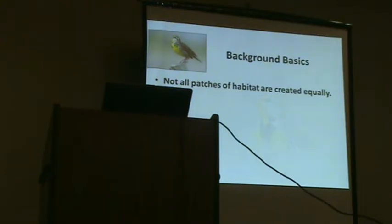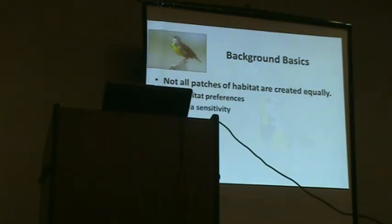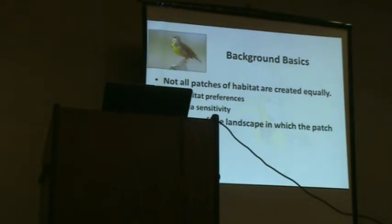Not all patches of habitat are created equally — we know that very well. We can think of it in a couple of different ways: both in terms of specific habitat preferences, since not all species are looking for the exact same patch of grass, and then in terms of area sensitivity — what may look to be a great patch of grass, if it's not sufficiently large, has pretty minimal value. Taking that out to the landscape is something we've been thinking a lot about for the last few years. But what I want to focus on recently is actually bird neighborhoods.